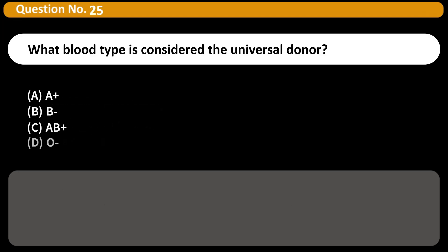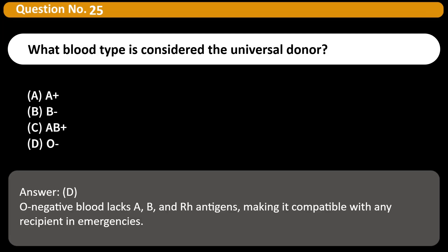What blood type is considered the universal donor? A) A+, B) B, C) A+, D) O. Answer: D. O negative blood lacks A, B, and Rh antigens, making it compatible with any recipient in emergencies.